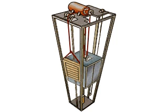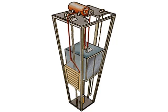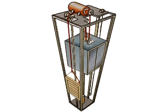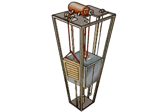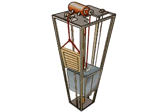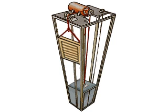A safety rope connected to the car operates a governor. Should the car fall, the governor throws a switch, which causes the car to grip the guide rails and stop.